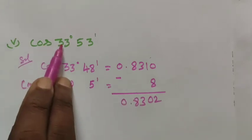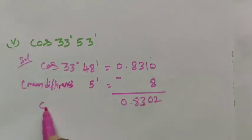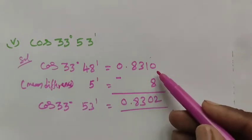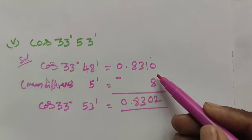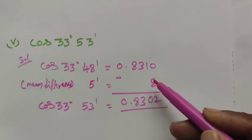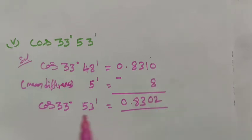The value of cos 33 degree 53 minutes is equal to 0.8302. So the value is 0.8302.